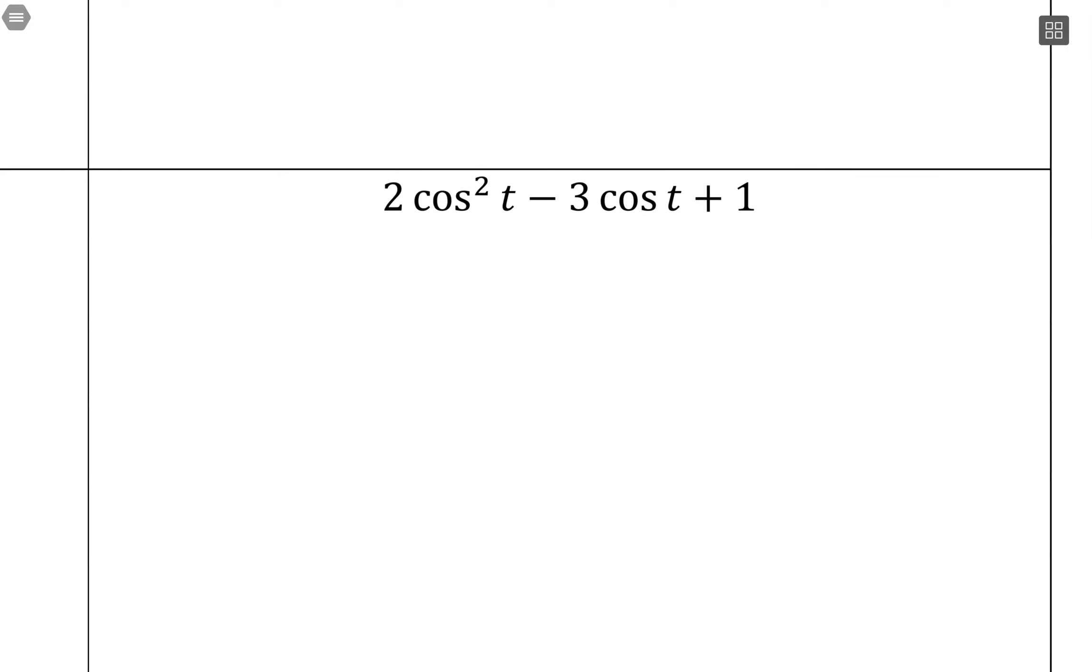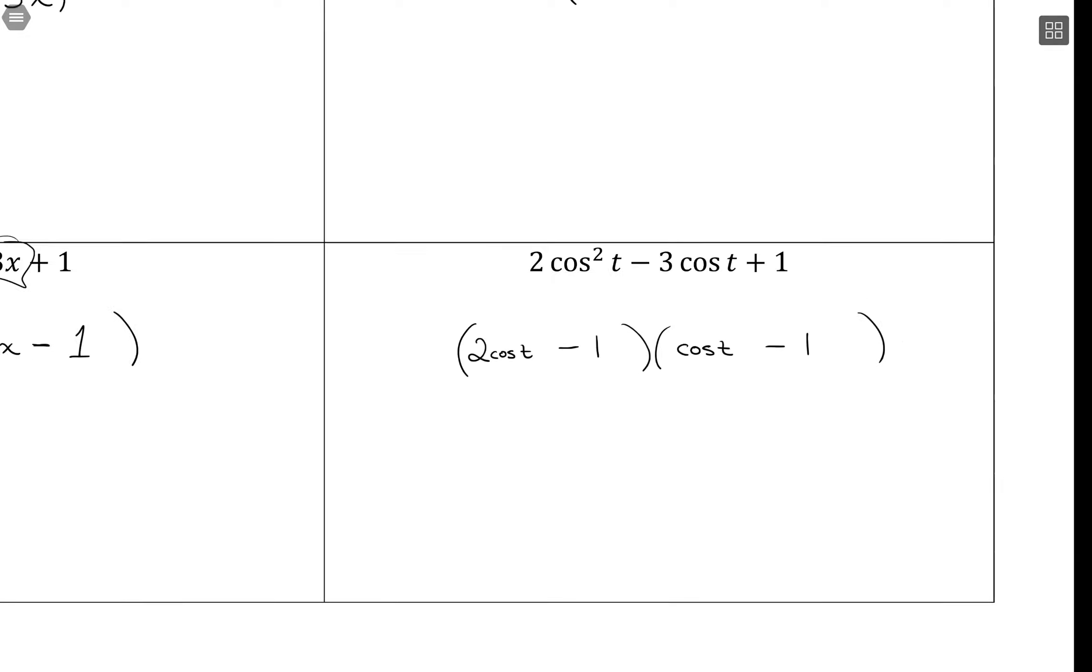So now this one has the same exact numbers. It's just instead of our variable x, we have cosine. So what I would have is go through that same process. We'd have a 2, and we're dealing with cosine, and we'd have a 1 cosine, and then two values that multiply to a positive 1 but add up to a negative minus 1 and minus 1.